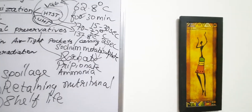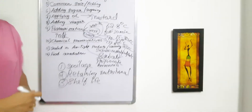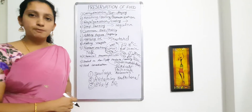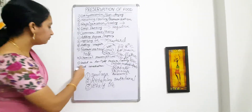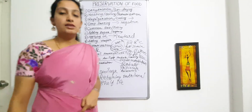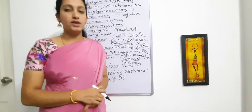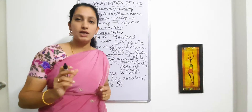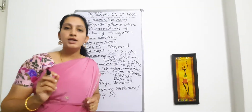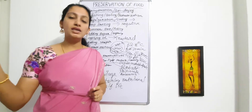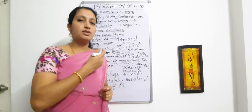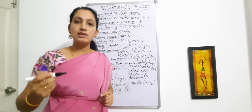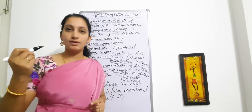Apart from those, many other preservatives are used to prevent spoilage. Next is sealing in airtight packets, otherwise called the canning method. After food is ready, it is packed in tight containers without the presence of oxygen. This process uses cans and is therefore called the canning method.